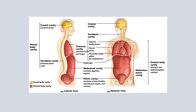The thoracic cavity is further divided into the superior mediastinum, in which we can see organs such as the thymus, which is an endocrine gland — we'll be reviewing that later. Then we can see the pleural cavity, where the lungs are going to be located. And we can see the heart located medially to the lungs.